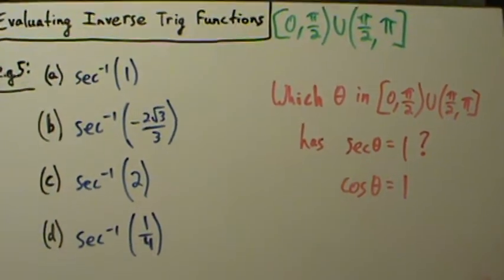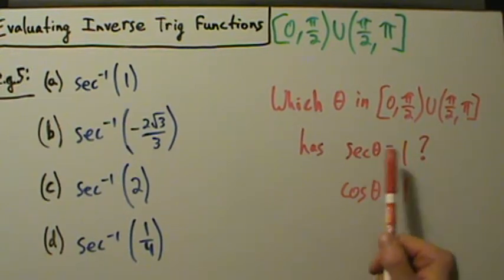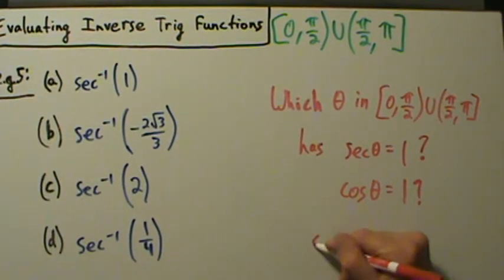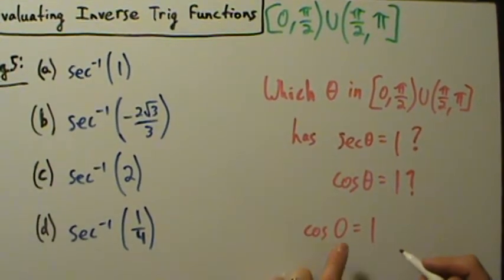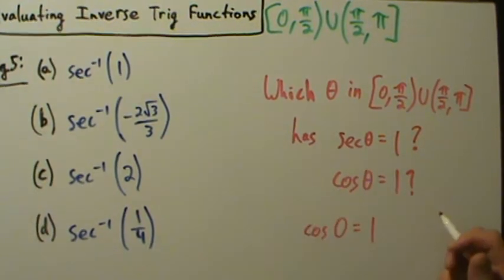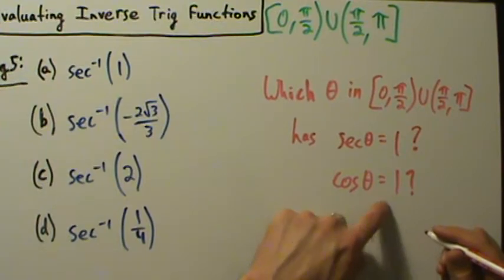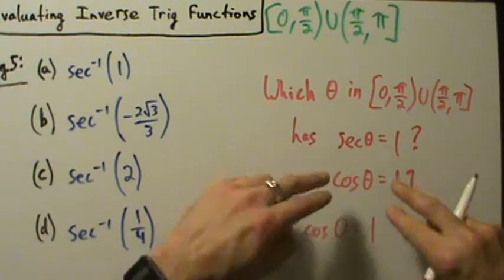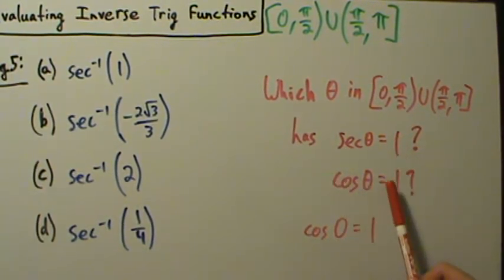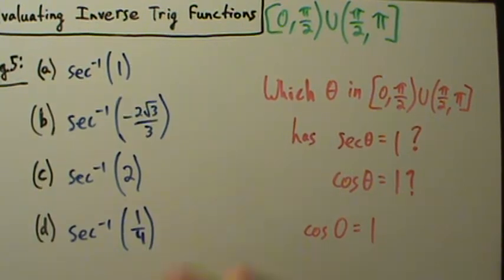Now we ask: which theta inside this interval has cosine of theta equal to 1? Looking at the unit circle, we see that cosine of 0 is 1. And 0 is inside the interval we want. So the answer to part A is 0. If you remember that secant of 0 is 1, you don't have to go through the cosine step — but if you need to, that's totally fine. Just remember that secant and cosine are reciprocals.